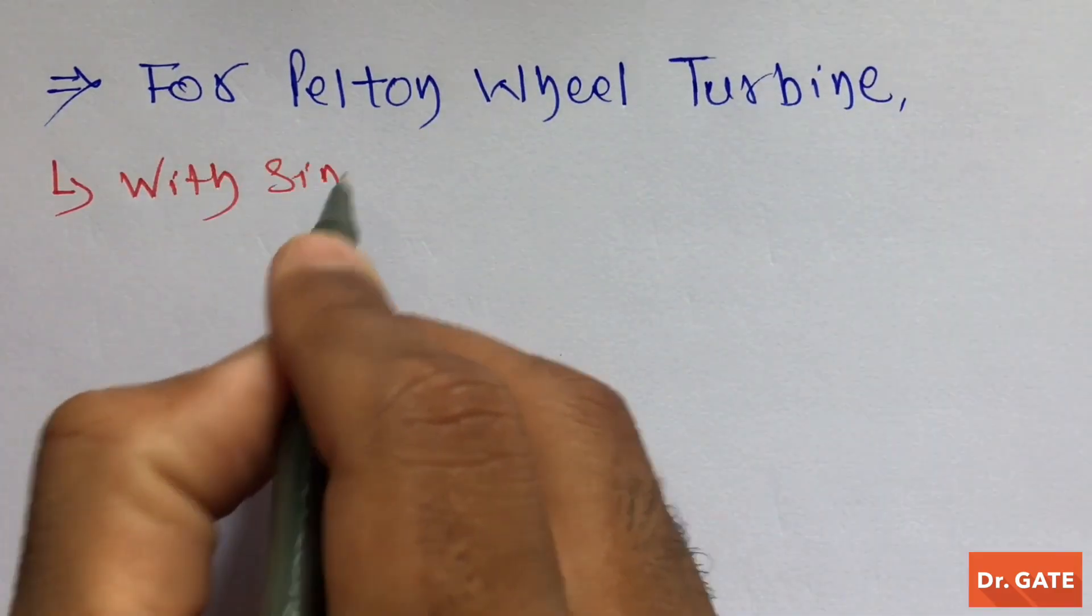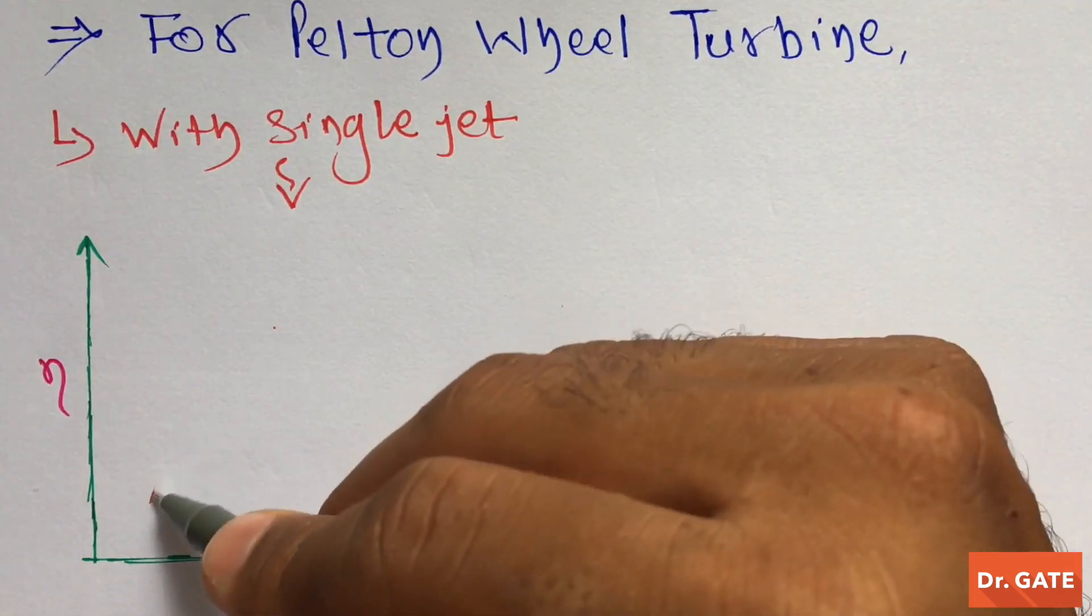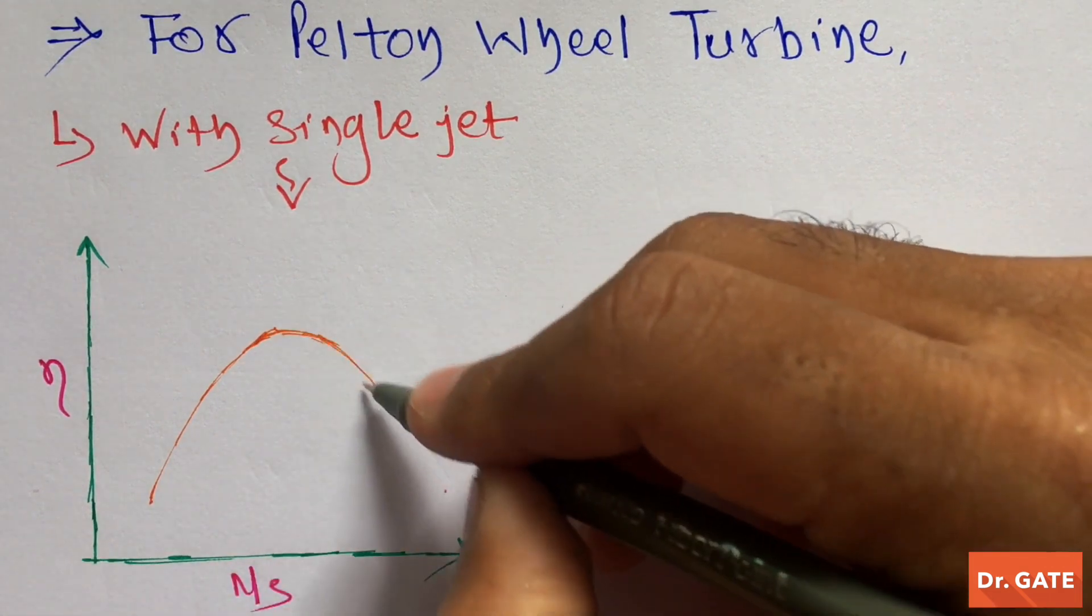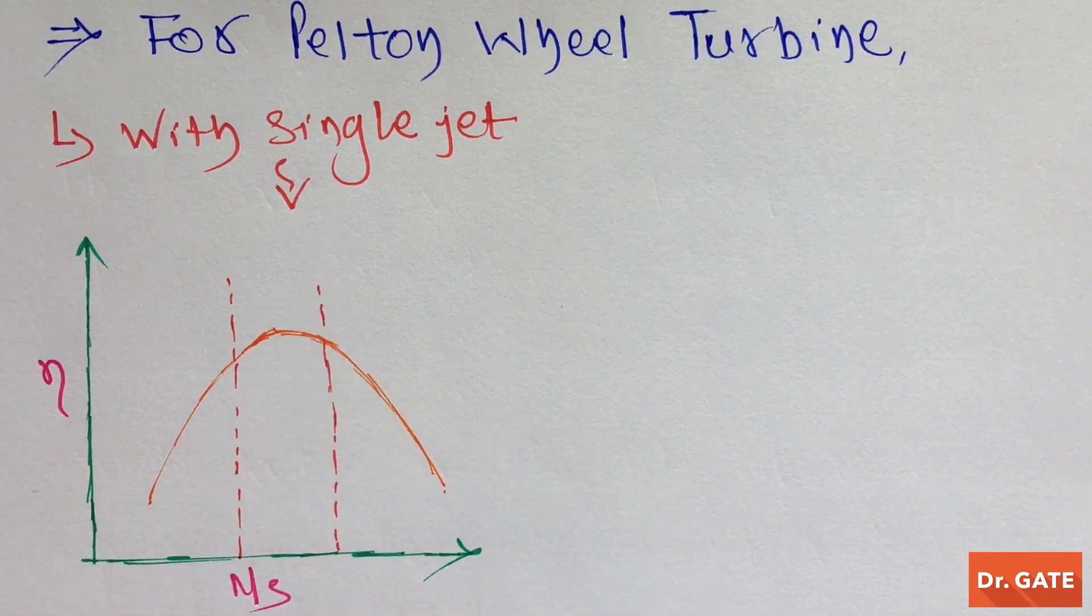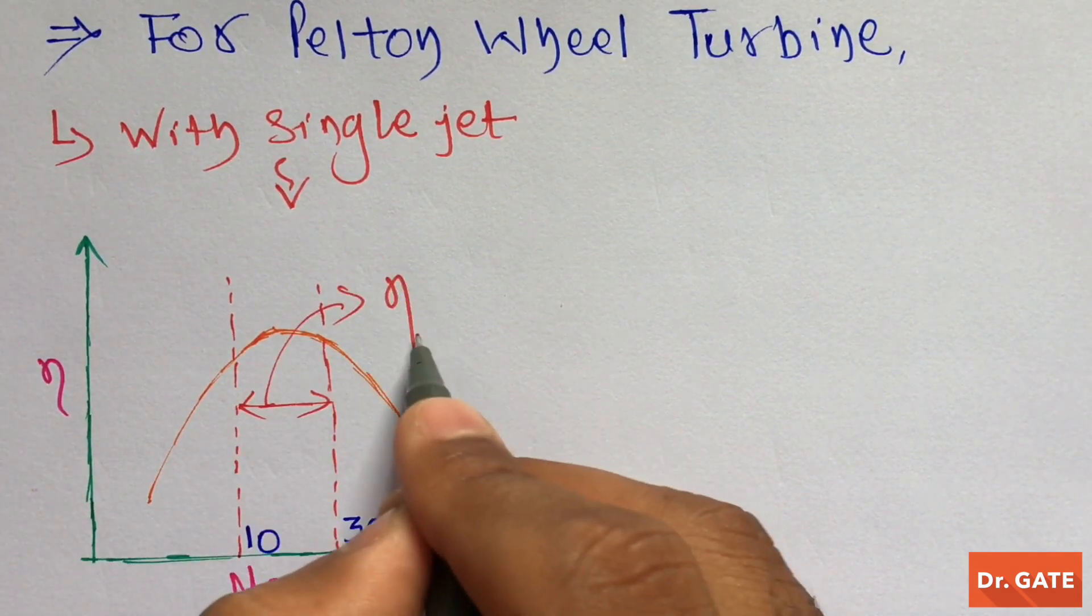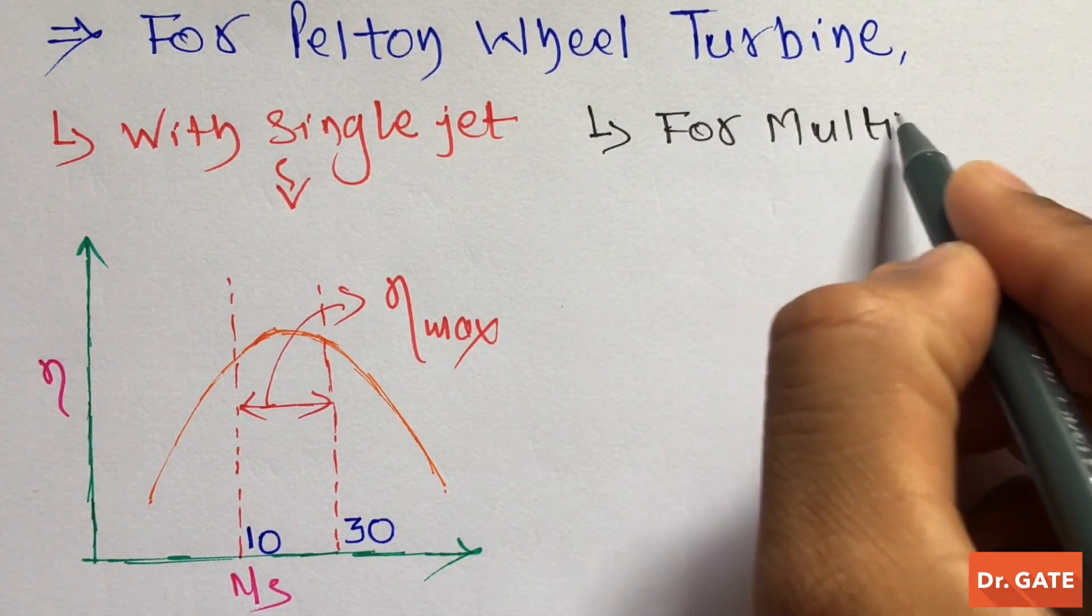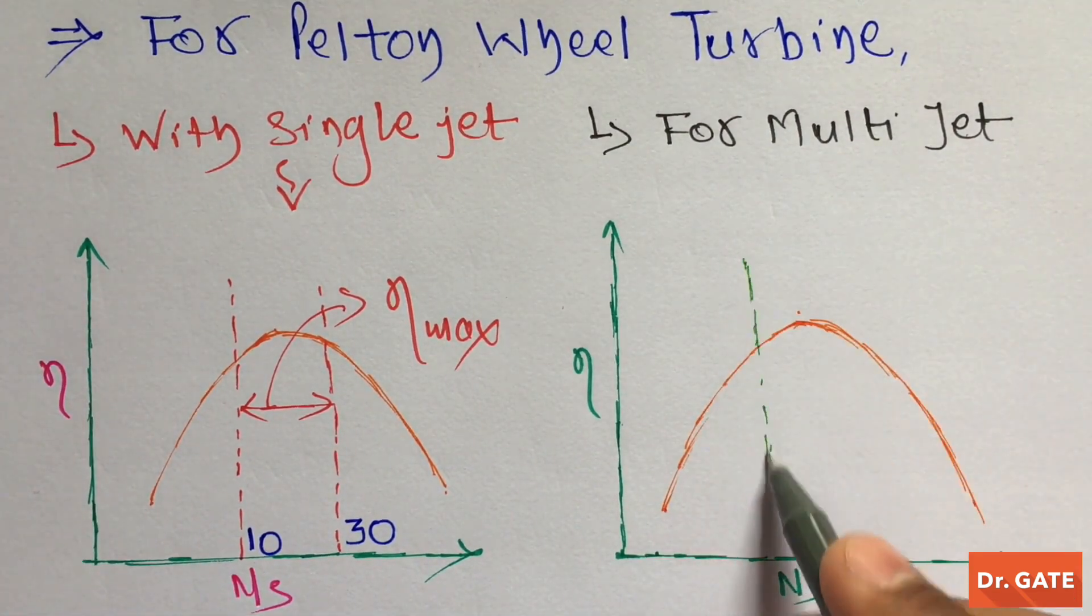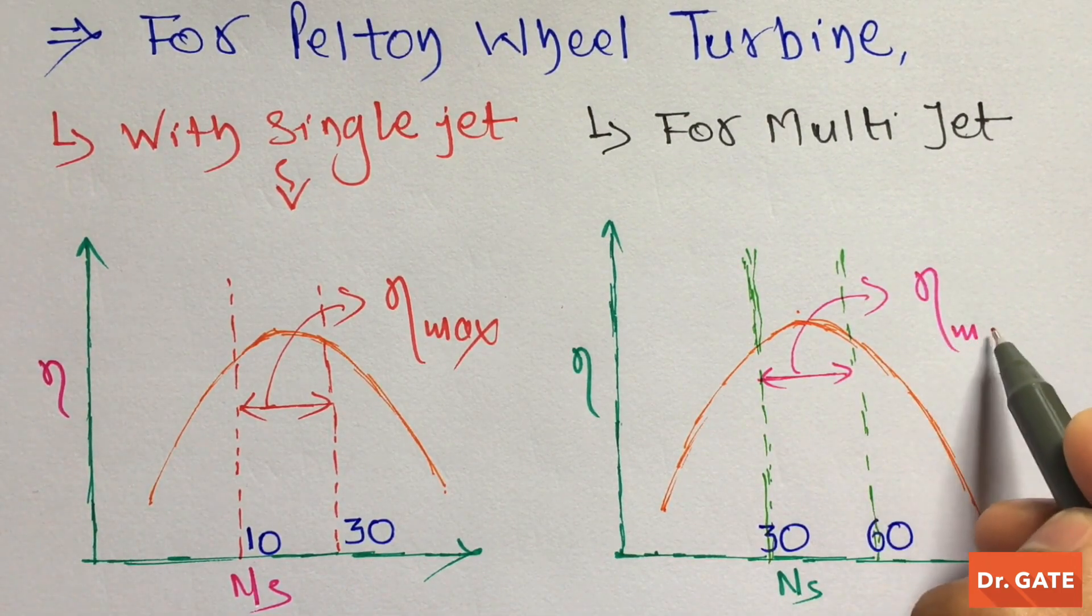For Pelton wheel turbine with single jet, initially efficiency of the turbine increases with the specific speed. Then after a certain value of specific speed, it starts decreasing with specific speed. And in between specific speed of 10 to 30, its efficiency is almost maximum. And for Pelton wheel turbine with multi jet, we get same nature of the graph. And here when specific speed is between 30 to 60, efficiency is almost maximum.